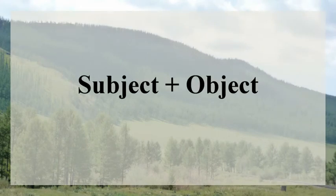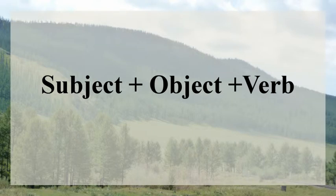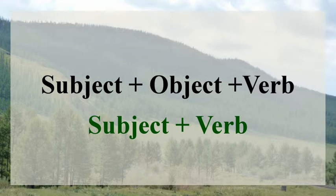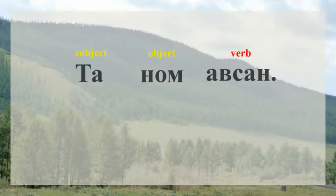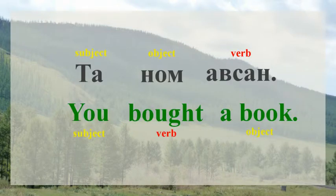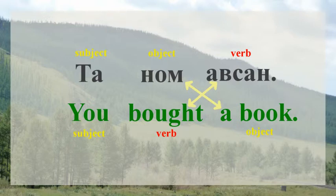Let's start with a quick look at basic sentence structure in Mongolian: subject plus object plus verb. Compare this with the basic English sentence structure: subject plus verb plus object. Take the following example to demonstrate this — 'Ta nom avsang,' meaning 'You bought a book.' Notice the reversal of the object and verb from Mongolian to English. This basic sentence structure is the foundation of all sentences in Mongolian.